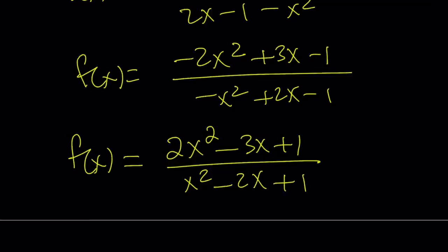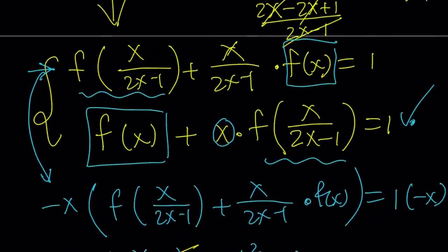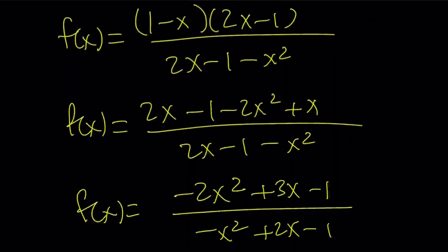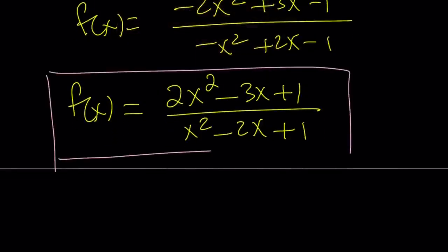That's one way to look at it. There's another way to approach the problem — not recommended — where instead of eliminating f of x over 2x minus 1, you eliminate f of x, find f of x over 2x minus 1, and then recover f of x by replacing x with x over 2x minus 1, which is the inverse of the same function. That's a roundabout way to do it, but if you plug the answer into the original problem, you'll see that it actually works.